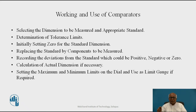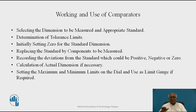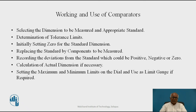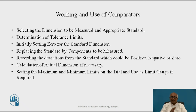Then the standard is replaced by the components to be measured, one by one. The deviation from the standard is recorded, which could be positive, negative, or zero. If the component has a greater size than the standard, there will be a positive deviation; if smaller, a negative deviation; if exactly equal, it will be zero. We can then calculate the actual dimension if necessary. Another possibility is setting the maximum and minimum limits on the dial and using it as a limit gauge — if the deviation lies within the limits, accept the component; if outside, reject it. There is no need to record the deviation when using the comparator as a limit gauge.